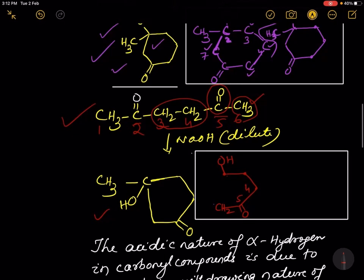CH₃CO is bonded with this number 2 carbon, and number 2 carbon is also bonded to a CH₃ group, so another CH₃ group is written over here. You see the structure is as shown on the screen.